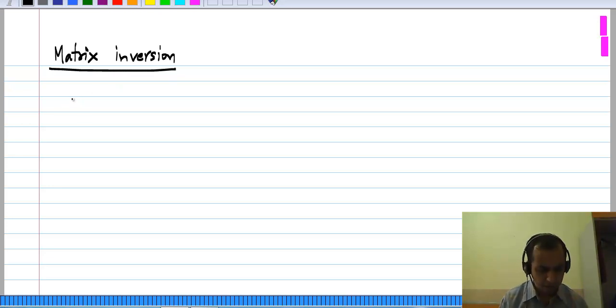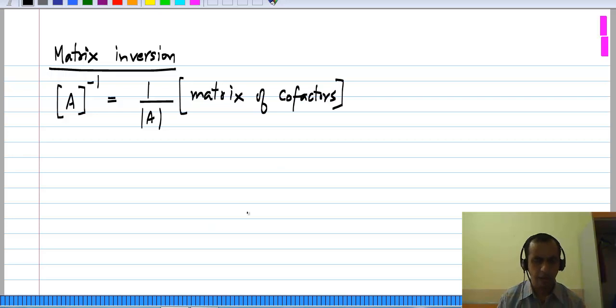In general, if you have a square matrix A, the inverse of that is 1 over the determinant of A times a matrix of cofactors. I will not go into the definition of all of these things, I will just show the results for a 2 by 2 and 3 by 3 matrix. Now this symbol of course means the determinant of A.